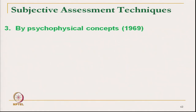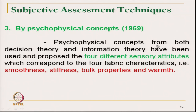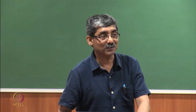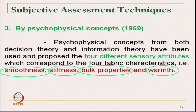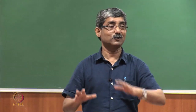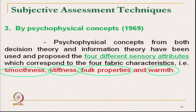Later, a psychophysical concept using decision theory and information theory proposed four different sensory attributes: smoothness, stiffness, bulk, and also warmth of the fabric. Warmness and coolness also give a direct tactile response — a fabric may give a good tactile sensation but if it also gives warmth, we may feel some discomfort. So warmness or coolness was introduced as a fourth sensory attribute.